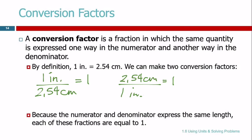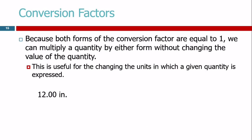If we multiply something by 1, does that change what it is? No. You can multiply by 1 all day long and the number doesn't change. 52 times 1 is 52. 37 times 1 is 37. So we can take a number or measurement like 12.00 inches and multiply it by 1, and it's not going to change what it represents — it's still 12 inches.